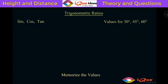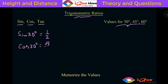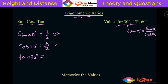Now we will recall some specific values of trigonometric ratios for special angles like 30°, 45°, and 60°, which we need to memorize and use frequently. Sin 30° is 1/2. Cos 30° is √3/2. Using the relation tan α = sin α / cos α, tan 30° equals (1/2) divided by (√3/2), so 2 and 2 cancel and we get 1/√3.